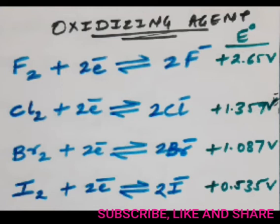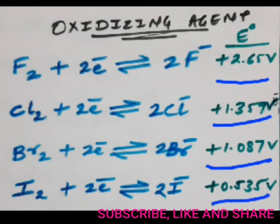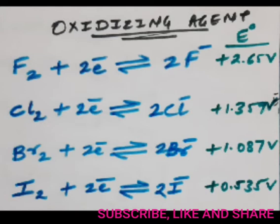The particular reduction potential values are specified on the right-hand side of the screen. For F2, it is +2.65 volts; for Cl2, +1.359 volts; Br2, +1.087 volts; and for I2, it is +0.535 volts. As we can observe, as we move down across the series, the positive reduction potential value is decreasing.